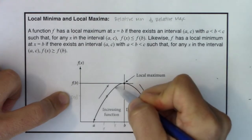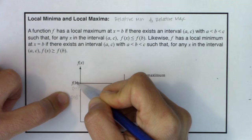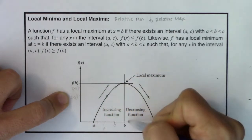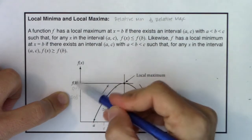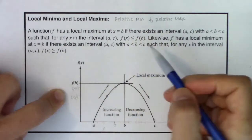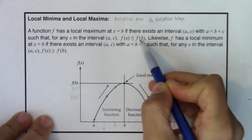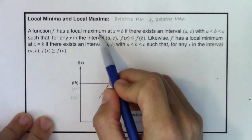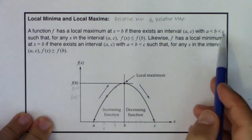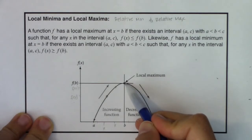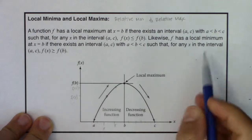If I pick my x anywhere else, f of x is still less than or equal to f of b. No matter where I put x, f of b will always be greater than or equal to f of x — or equivalently, f of x is always less than or equal to f of b. This is always the high point, and the high point means we have a maximum. So you have a max if this is the highest y value, relatively speaking, inside the interval from a to c.